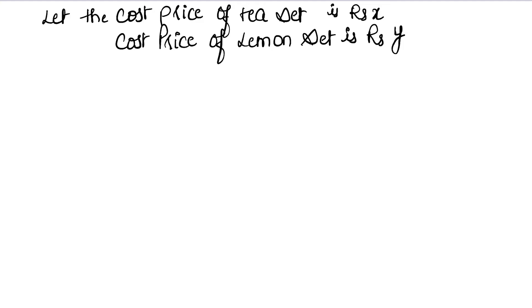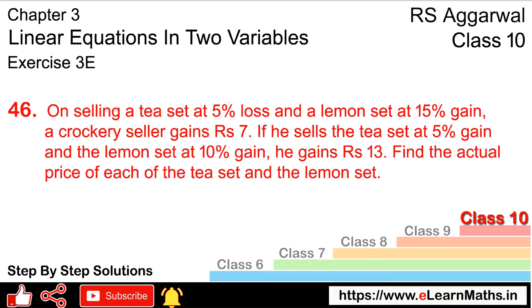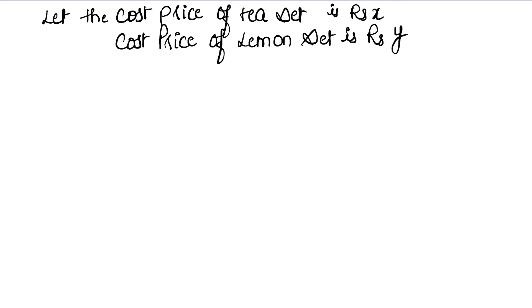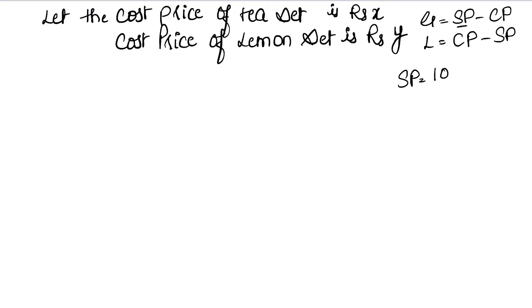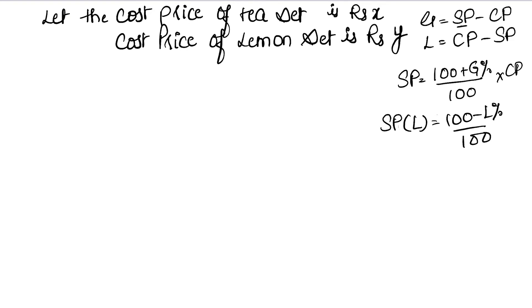अब हमें cost price पता चल गई. Loss हमें दे रखा है — tea set पे 5% loss और lemon set पे 15% gain. Gain होता है जब selling price ज़्यादा होता है cost price से, और loss होता है जब cost price ज़्यादा होती है selling price से. Selling price का formula: SP in case of gain = (100 + gain%) / 100 × CP, और SP in case of loss = (100 − loss%) / 100 × CP.